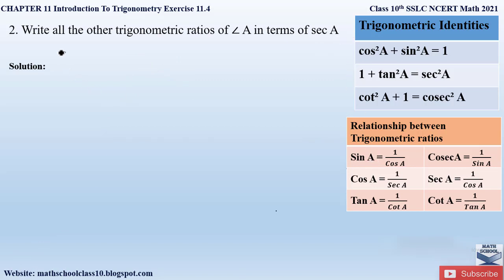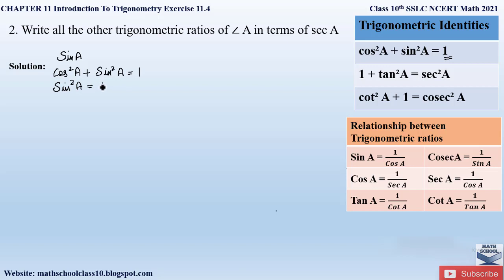First, let us consider sine A and write it in terms of secant. In the table you cannot find any direct relationship between sine and secant, but since secant A equals 1 by cos A, we will write sine in terms of cos using our first trigonometric identity: cos²A + sin²A = 1. We find the value of sine A by sending cos²A to the right-hand side, giving sine²A = 1 − cos²A.